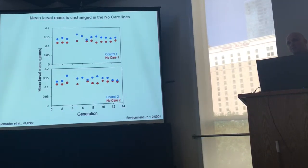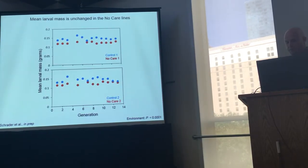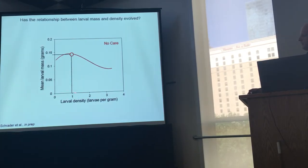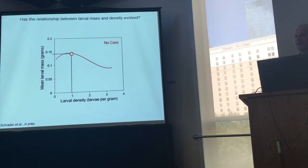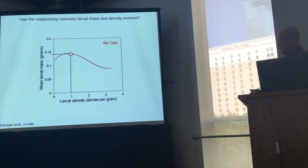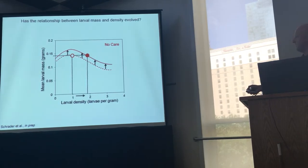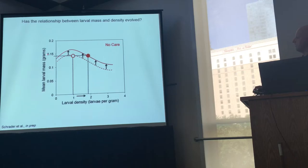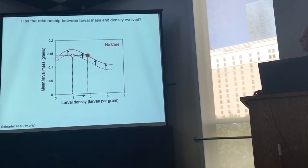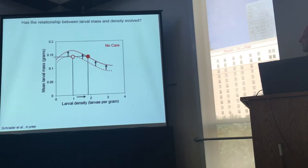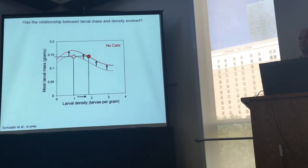One thing I want to suggest is that larval mass may actually be increasing, but it's increasing in a way that is cryptic because density is also increasing. We can look again at this hump-shaped relationship between larval density and mean larval mass. At the beginning of the experiment, density was around one larva per gram. What I want to suggest is that maybe the relationship between larval mass and density itself has actually evolved, masking any changes we might have seen. The way this could happen is that this reaction norm — shown for generation 1 as a dashed line — actually just increases its height, producing larger larvae across a range of densities. But because density is also shifting, we're not going to see any change in mean larval mass across time. This shift in the reaction norm could be because we're selecting in our environments for increased self-feeding.